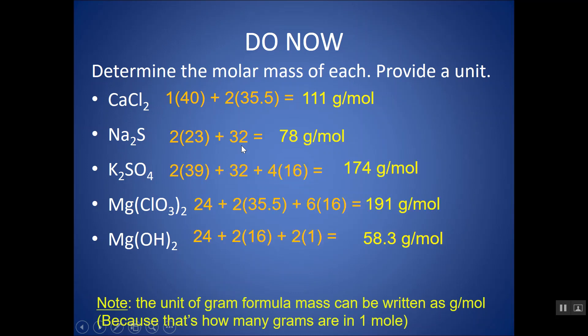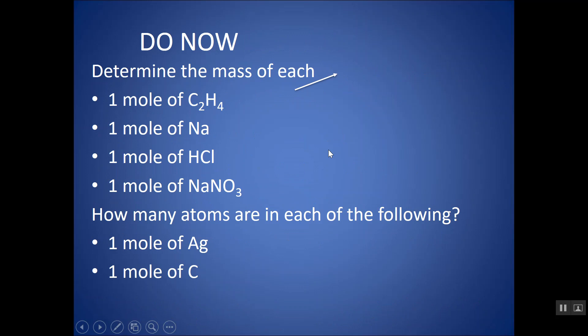Take a moment, try these examples. Determine the mass of each one mole. We're just adding up the formula masses, but giving it the units of grams or grams per mole if you prefer. How many atoms are in each of the following? If we see a mole, a mole is 6.022 × 10^23 objects.